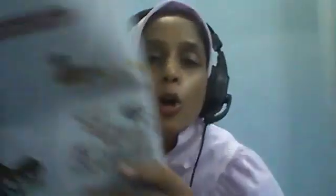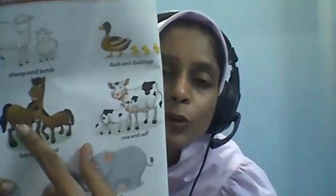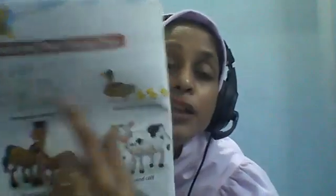The next one is horse. The young one of horse is known as foal. Horse hum sab jaante hain. We know the animal horse, but have we ever thought about what their baby is called? The young one of horse is known as foal. The young one of sheep is lamb, young one of duck is duckling, and young one of horse is foal.